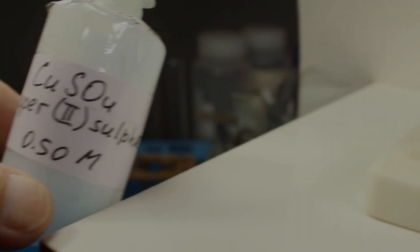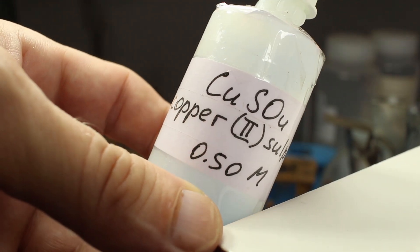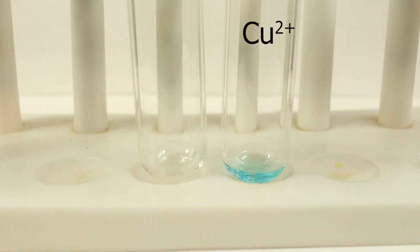Sodium hydroxide forms precipitates with most transition metals, colored precipitates of hydroxides of transition metals.